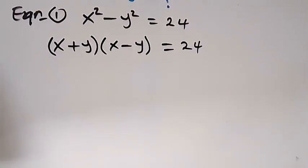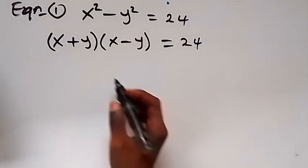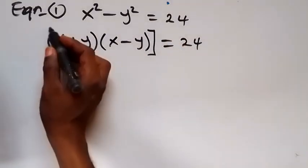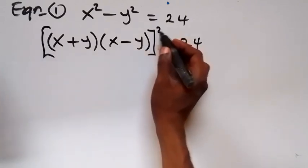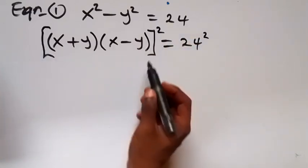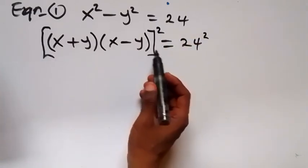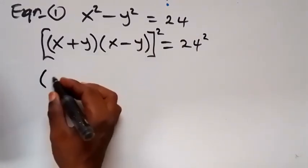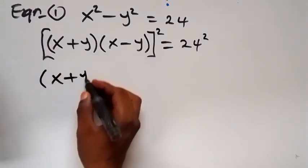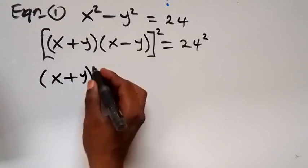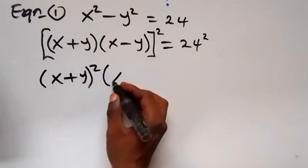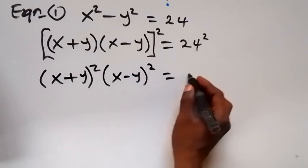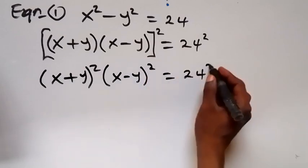From here, let's square both sides of this equation — we square this side, and also we square this side. Then the square on this side will affect both terms. That is, we have x plus y squared, times x minus y squared, equals to 24 squared.